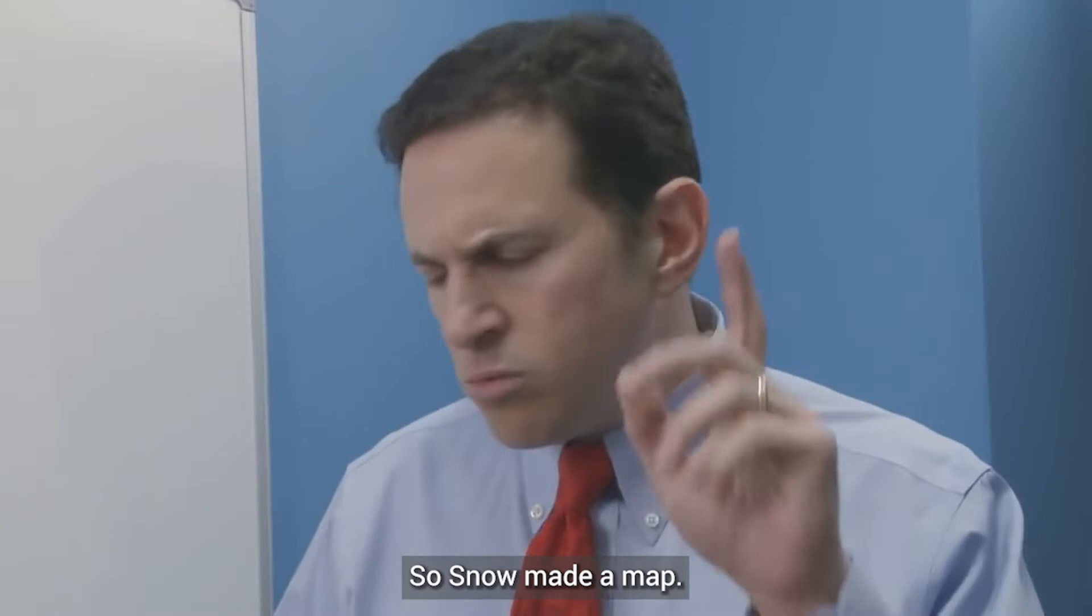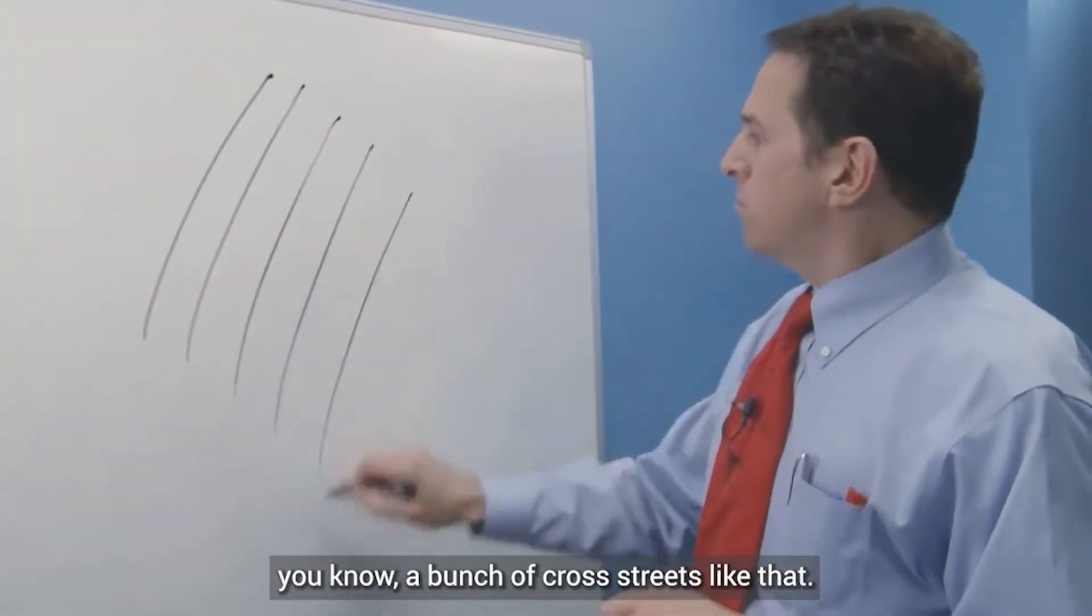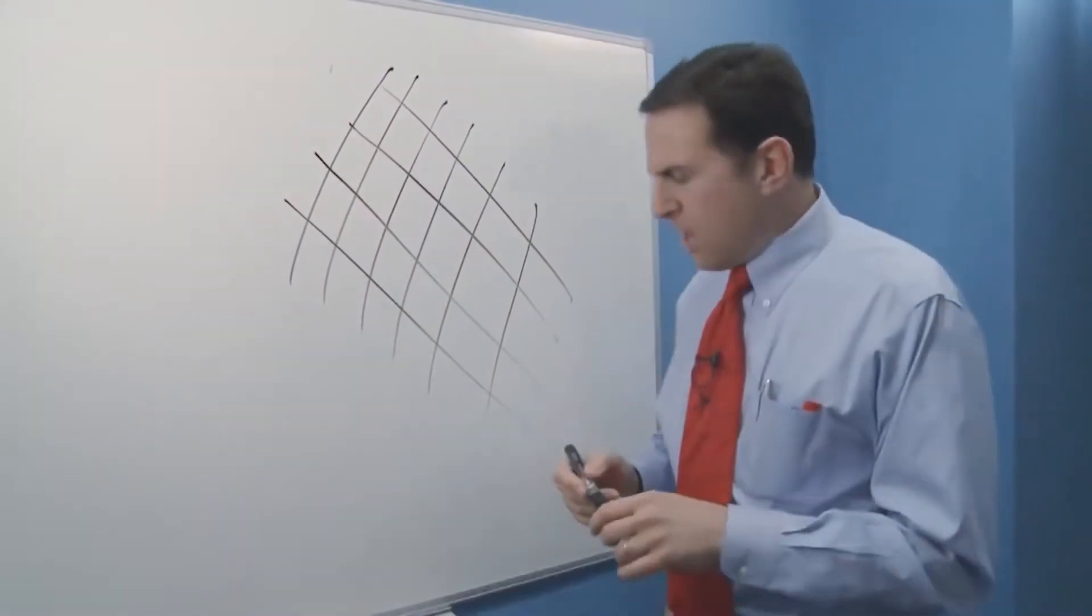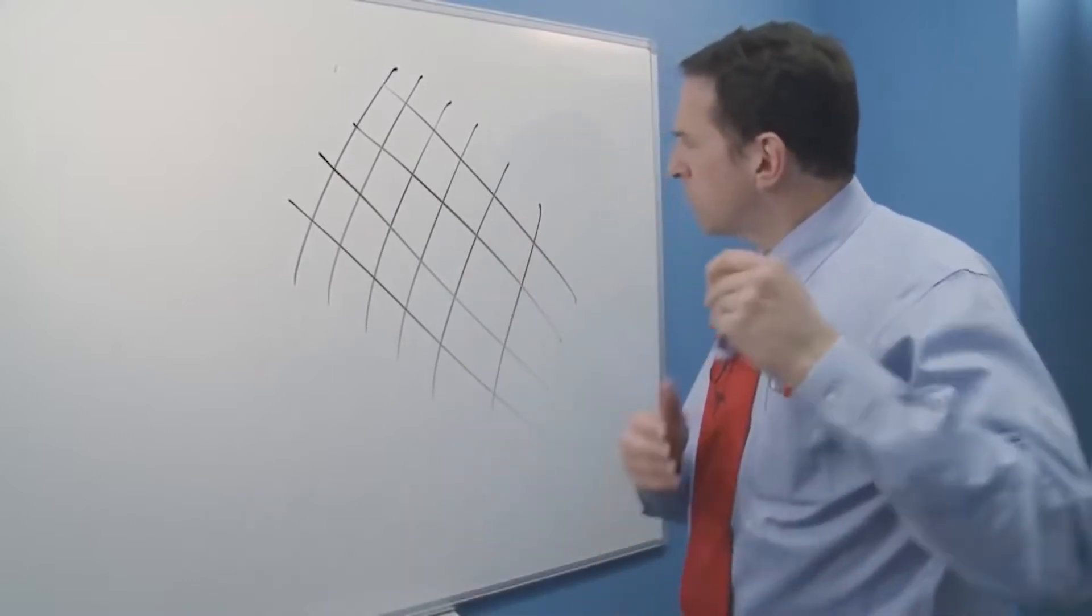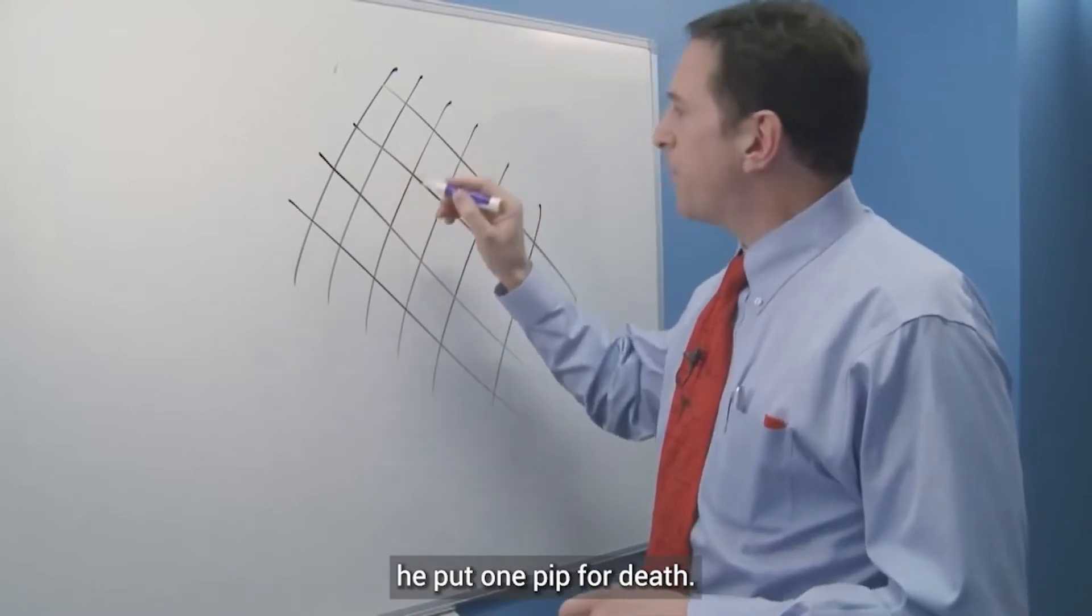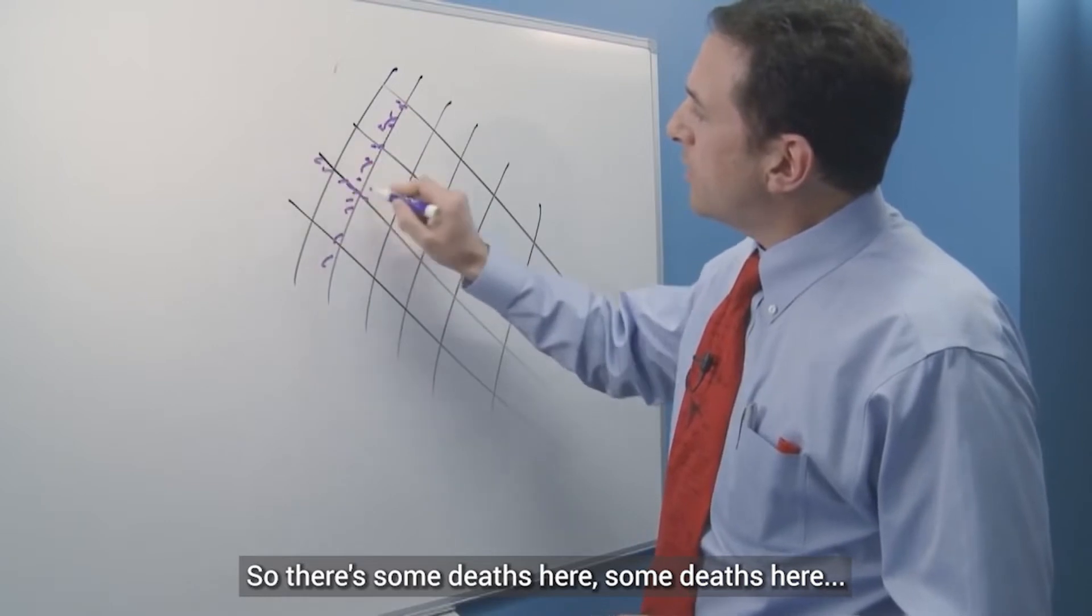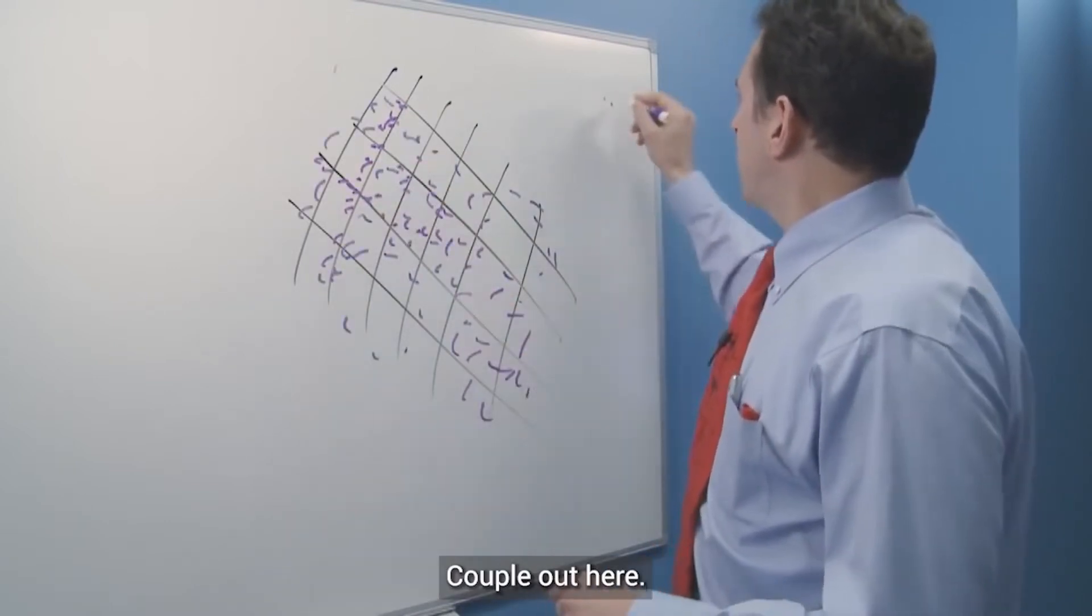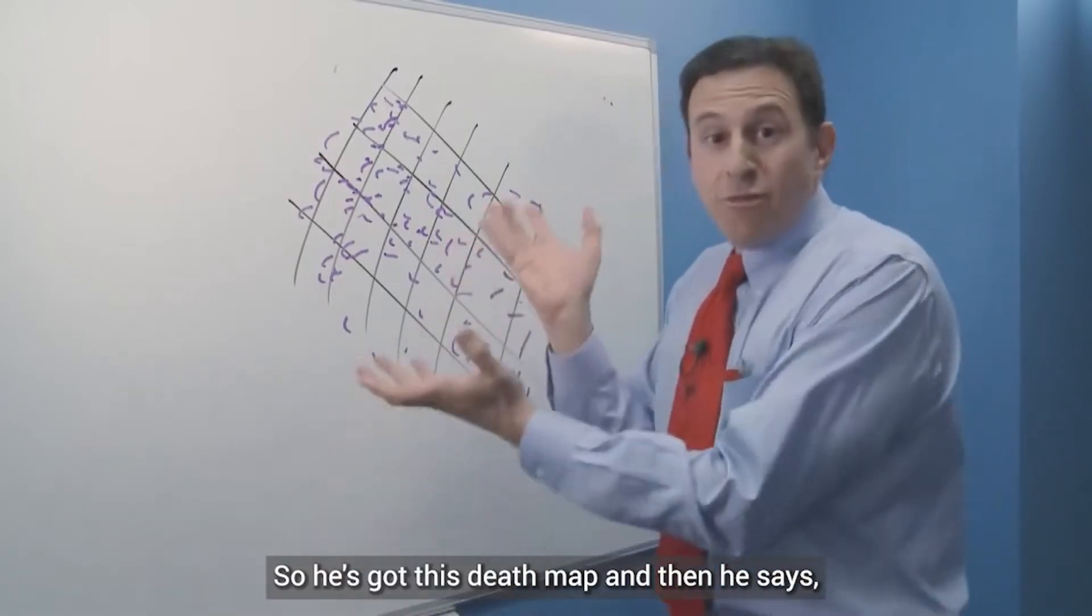So Snow made a map. He took a map of the Soho district, which basically, you know, a bunch of cross streets like that. And he just added deaths. So every household that had had a death, he put one pip for death. So there's some deaths here, some deaths here. Deaths all over the place. A couple out here. All right. So he's got this death map.